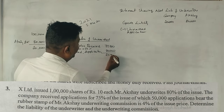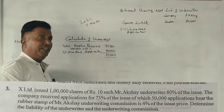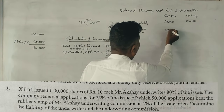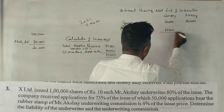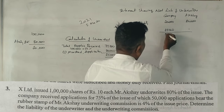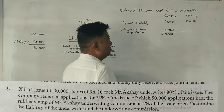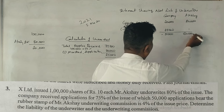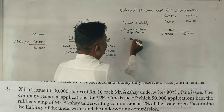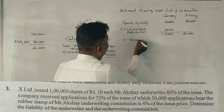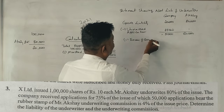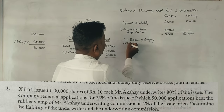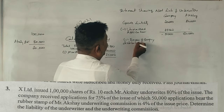The company has 20,000 shares and there are 25,000 applications. The company has about 25,000 applications, giving an excess of around 7,000. This excess is distributed to Akshay.